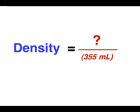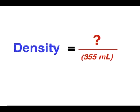This means that, even though the volume is the same, the ratio of mass to volume, or the density, is actually different for each can. Try this experiment for yourself, and you will see that the ratio for the regular pop gives you a number greater than one. But the ratio for the diet pop gives a number that is less than one.